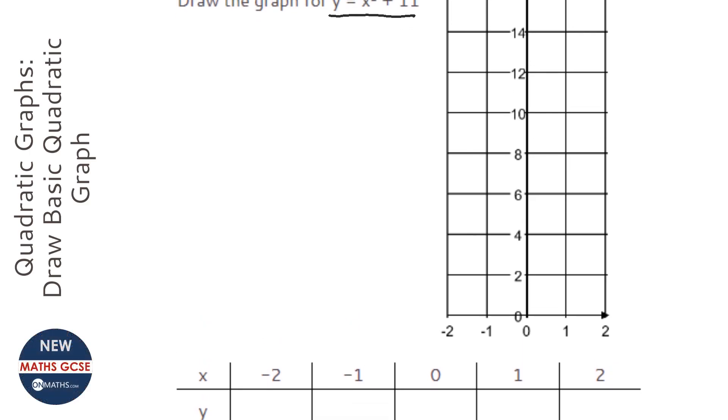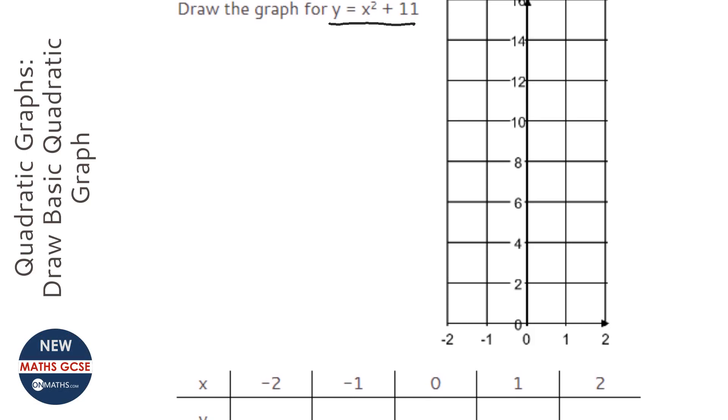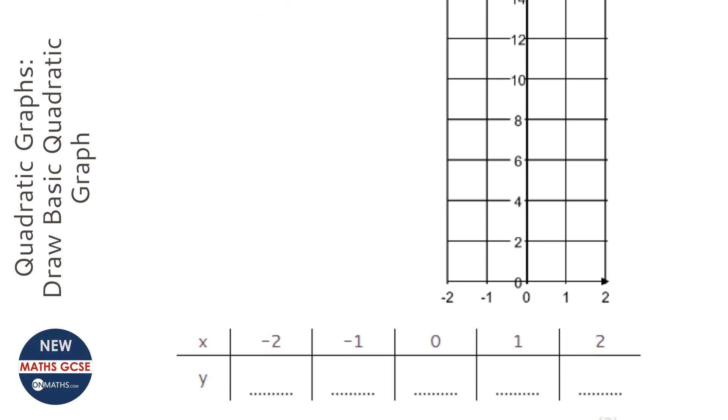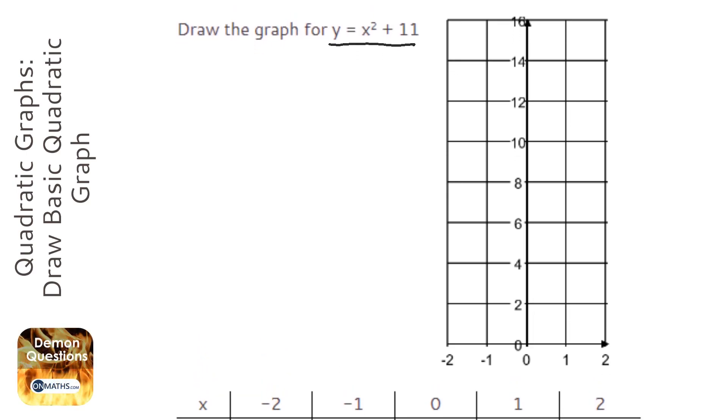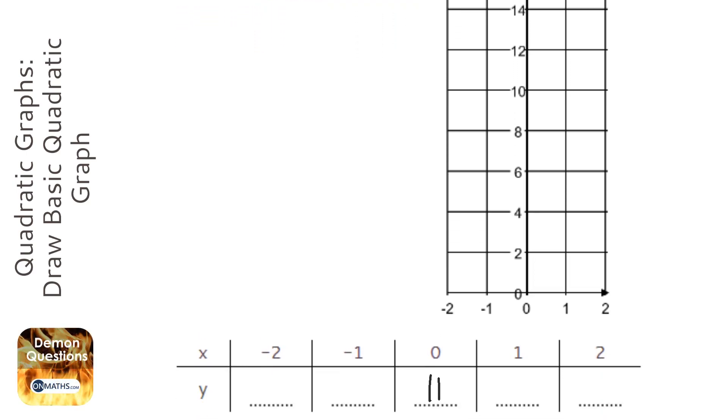So, first one, when x is 0, y is going to be 0 squared plus 11, which is 11. When x is 1, 1 squared is 1, plus 11 is 12.